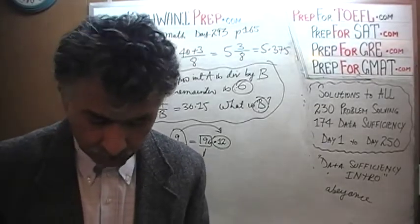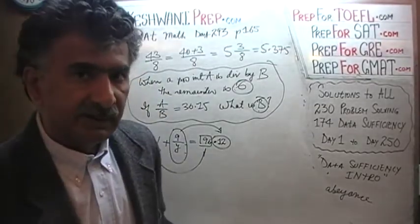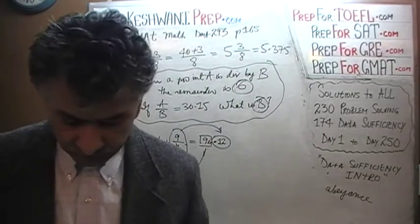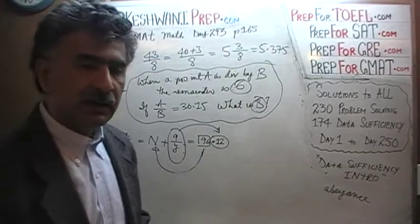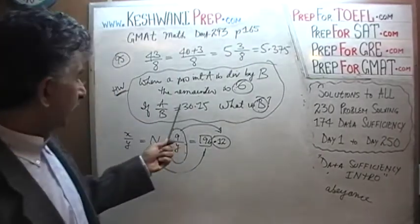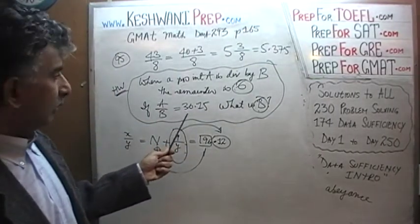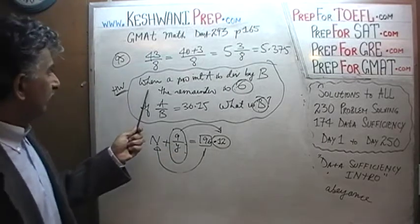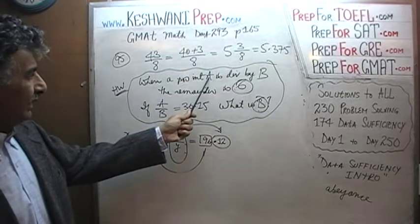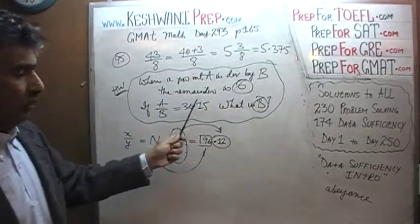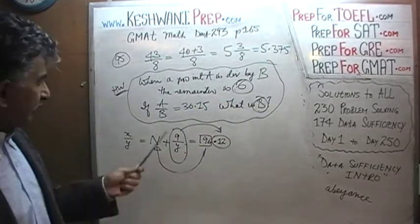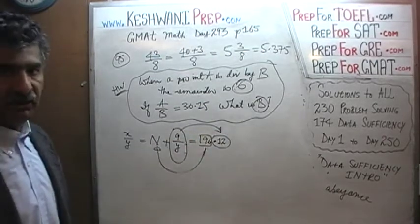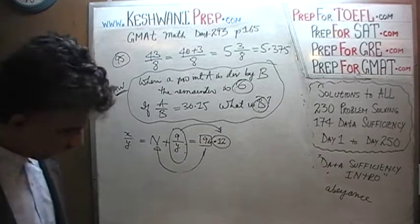What we are about to do is a problem that is very similar to problem number 95 that we did yesterday. Yesterday we did problem number 95, the very first problem in the second column. And then at the end of the video, I gave you homework. This is the homework. This is the problem that we are going to work on right now. It is very similar to number 95. Here's what it says. It says, when a positive integer a is divided by b, we are told that the remainder is 6. We are further told that if a over b equals 36.15, what's the value of b? That's what it is. We just have to find the value of b.